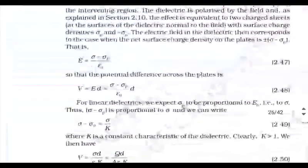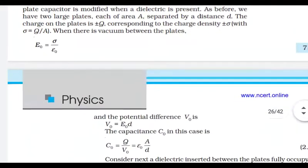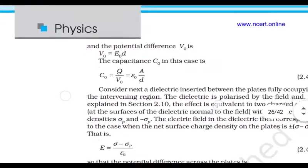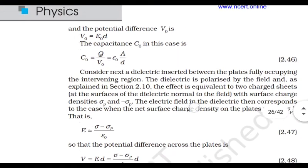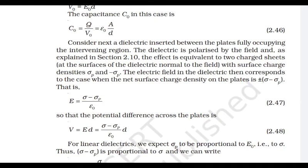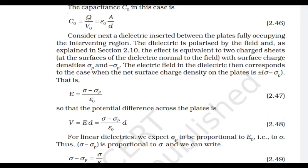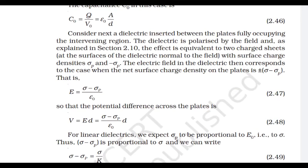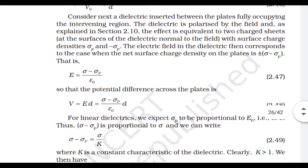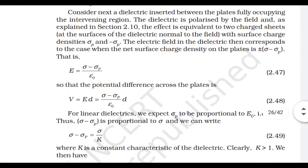The potential V₀ = E₀·d from the definition, and the capacitance C₀ = Q/V₀, which is what we just derived. Now we are inserting a dielectric between the plates, fully occupying the space — there is no gap. The dielectric is completely sandwiched between the two plates, which are positively and negatively charged respectively.